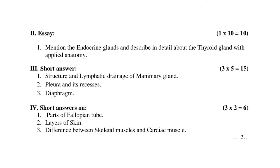Short answer questions: Number one — Structure and lymphatic drainage of mammary gland. Number two — Pleura and its recesses. Number three — Diaphragm. Roman numeral IV: Very short answers — 2 marks each, 3 into 2 equals 6 marks. First — Parts of fallopian tube. Second — Layers of skin. Third — Difference between skeletal muscle and cardiac muscle.